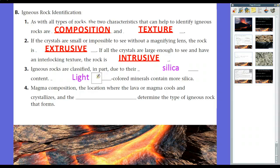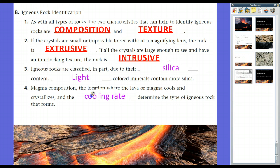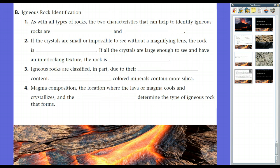In addition, magma composition, the location where the lava or magma cools and crystallizes, and the cooling rate determine the type of igneous rock that forms. The faster the cooling rate, the more likely it might even be an extrusive rock, or even within the Earth's surface, cooling rates differ, and the different types of crystals go ahead and form from there. So, the things to remember for igneous rocks are the two types, extrusive and intrusive rocks, and how they're formed.